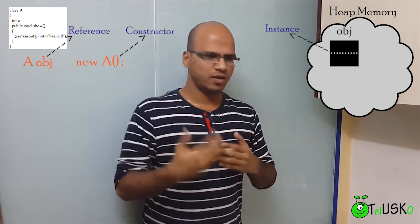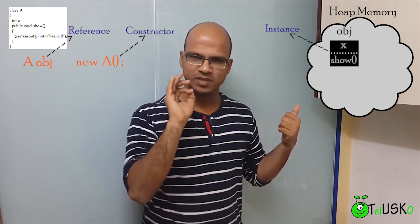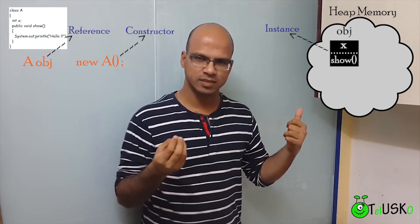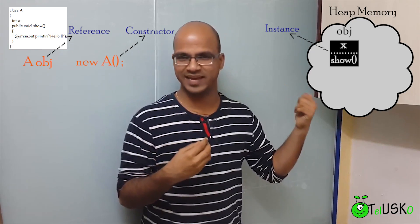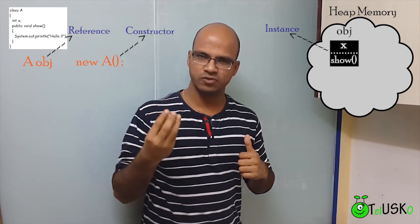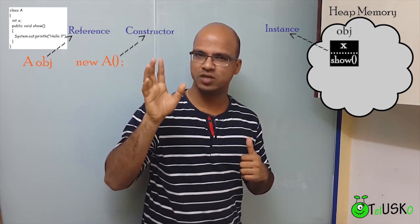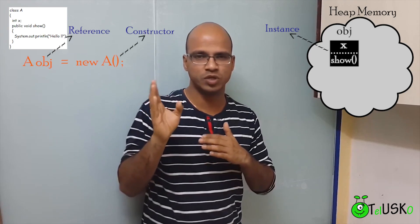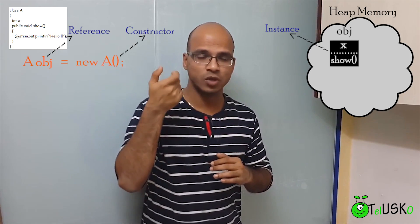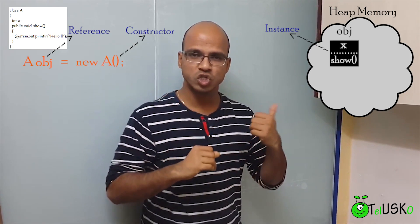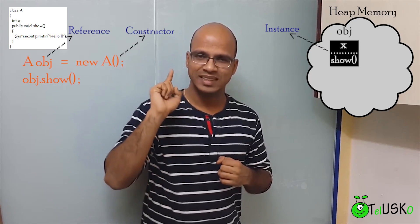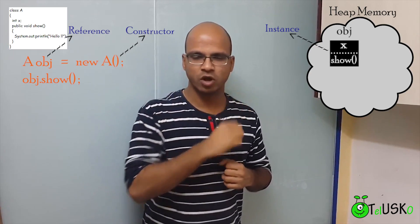But now let's say in that object, we have two things. We'll be having variables and we'll be having methods. In order to access those data, in order to access that variable X, in order to access that method show, we need to create a reference. So that's how we say A obj. We have to have A obj equal to new A bracket. So that's how you create an object. So new A, that's an object, and obj is a reference. In order to call show, we have to use obj.show because this obj here is directly linked with that object.